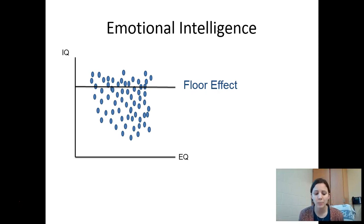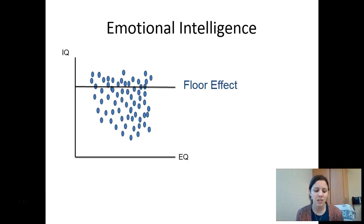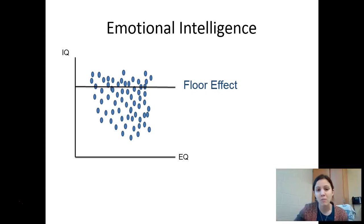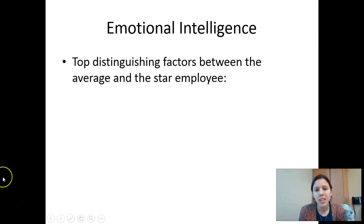You might even experience this in college — you might be considered one of the smartest people at your high school, really successful, standing out from your peers. But when you go to college and you're in a class with everybody who has the same ACT score, everybody who's been in the top 10% of their class, there's not so much separating you anymore. That's the floor effect. Goleman proposes that in this situation, the only thing that can separate you is your level of emotional intelligence.